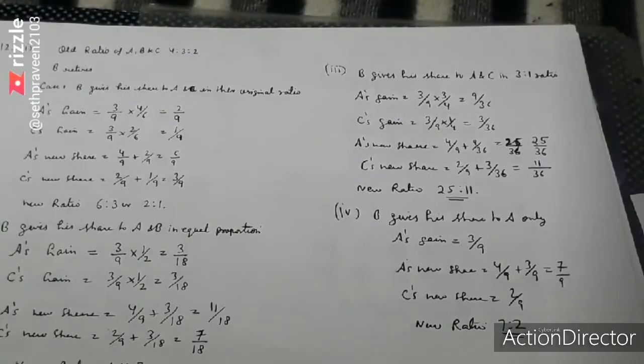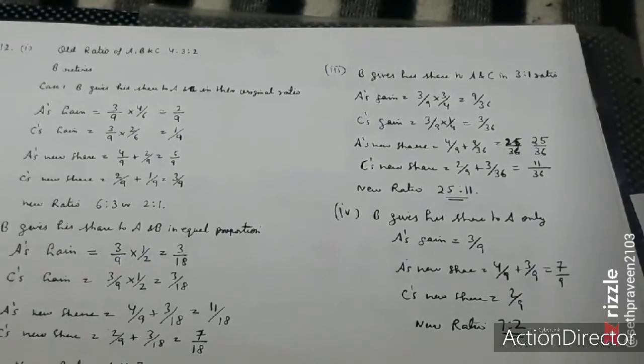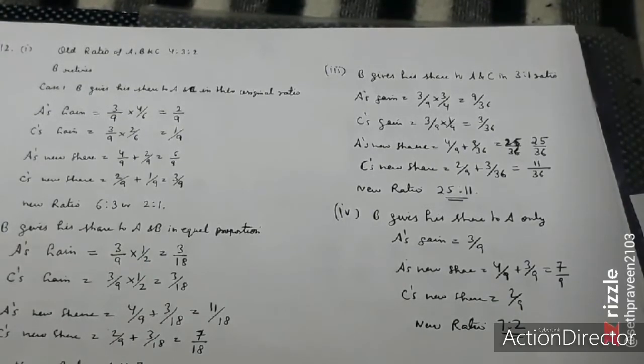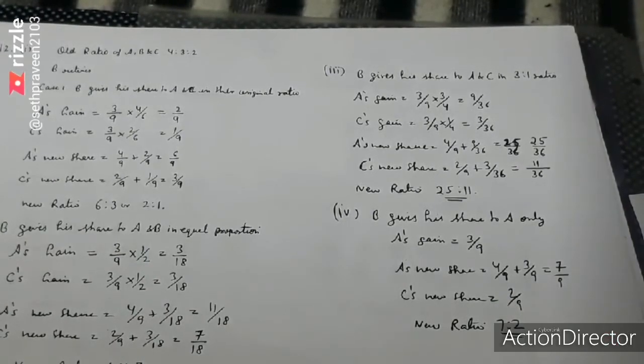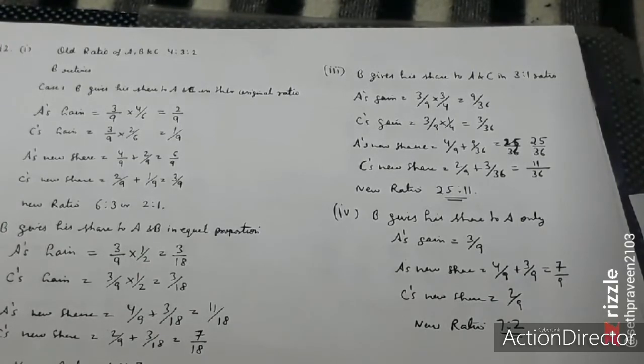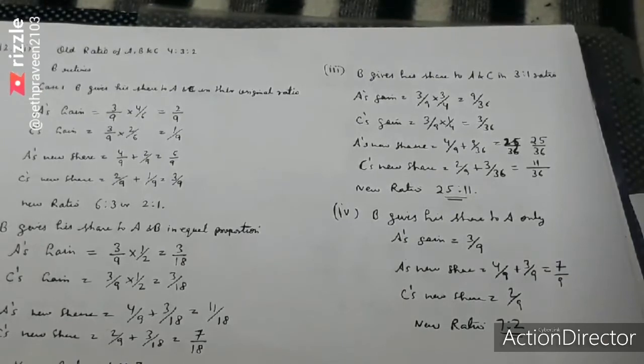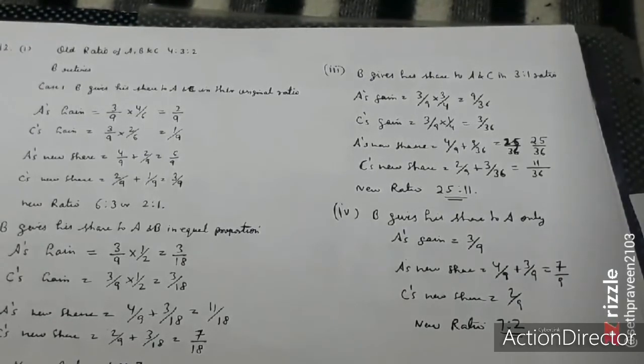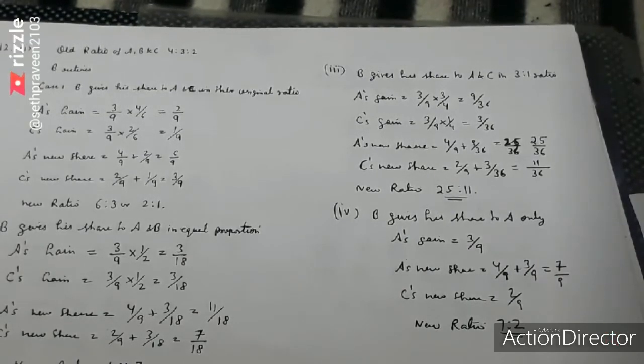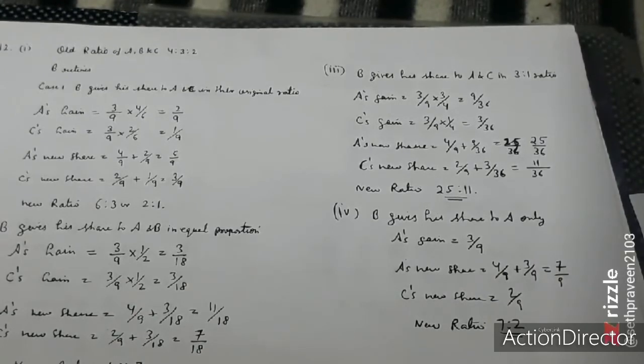Part 3: B gives up 3 by 9 share. The new share is 3 by 9 in the ratio 3 to 4. A and C become new shareholders with B gaining 3 by 21. They gain in the next share, and C's share improves.